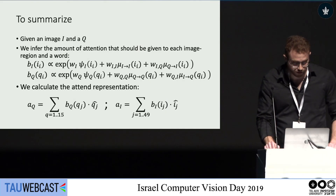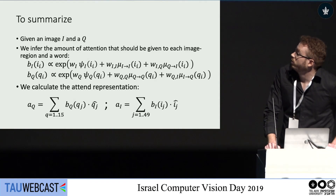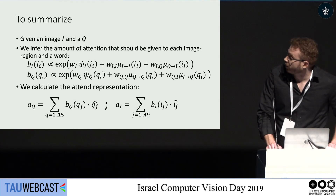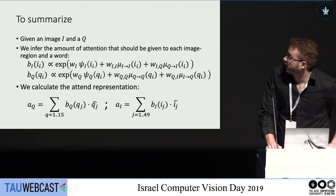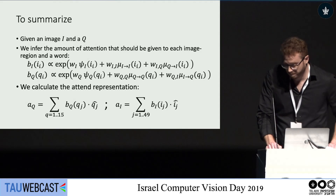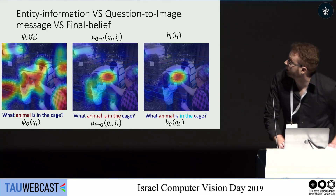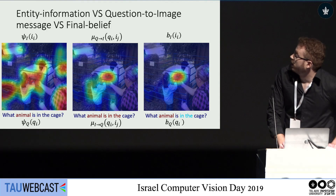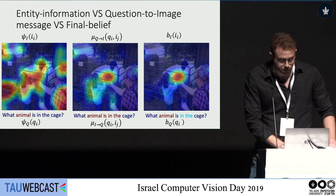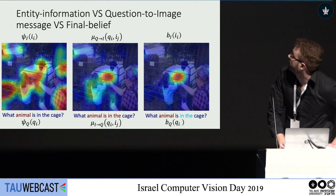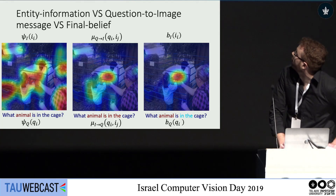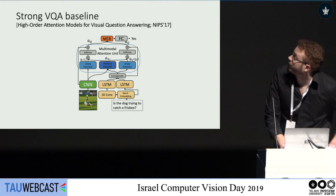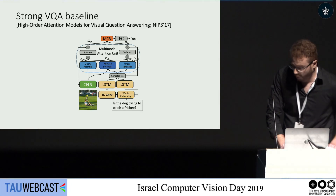To summarize: when given an image and a question, we infer the belief for each region and each word in the question using the equation just described. Then we calculate the attended representation using a weighted sum. We have the entity information on the left, the message from question to image showing how much each region correlates with the words, and the final belief looks best of all — meaning we need all the components to get the accurate belief. This allowed us to get a very strong VQA baseline, which was state-of-the-art at the time, presented at ICCV 2017.